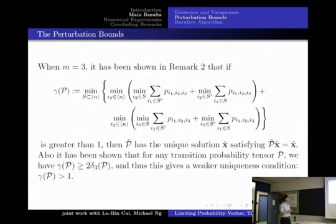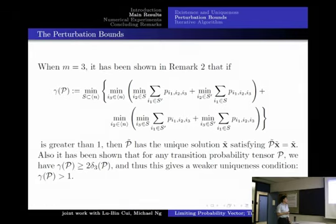When m equals 3, it has been shown in Remark 2 that if gamma of P is defined by this way and is greater than 1, then P has the unique solution x satisfying P x equals x. Also, it has been shown that for any transition probability tensor P, we have gamma of P is larger than 1.